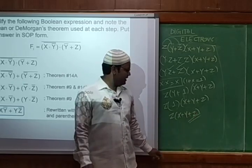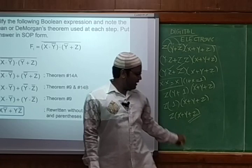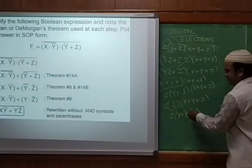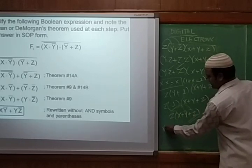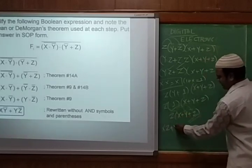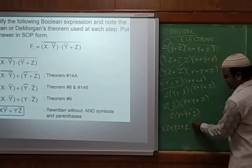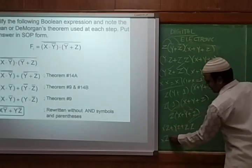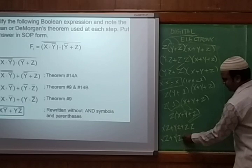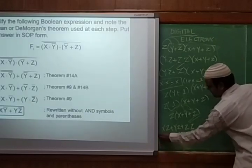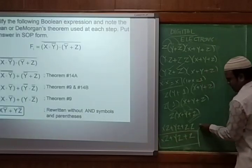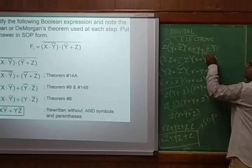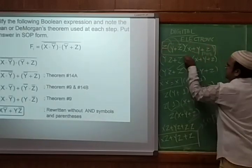Now z into (x + y + z) — we multiply z with each term: xz + yz + z·z. Since xz and yz remain as is, and z·z simplifies to z, the expression is now converted into SOP form: xz + yz + z. This was originally in POS form and we have successfully converted it into sum of product form.